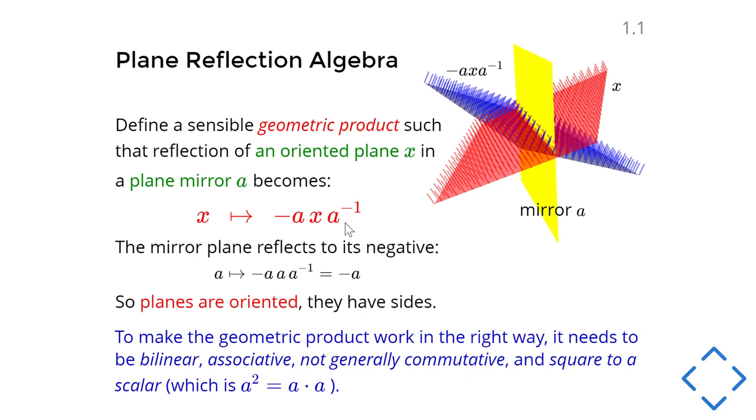We're going to take this as the core of our need to define a proper product. You immediately see that if I would plug in the mirror A itself instead of X, then whatever A A inverse means, it should be one. So I get minus A, and that means apparently we have an oriented geometry. We have not only planes but planes that have sides. And the mirror A, if you reflect it in itself, the shiny side gets to the other side, and this is what the minus means. And gradually as you start working through this, you find that this product is not that exceptional at all. It's just a bilinear product, so bilinear in each of its terms. We're going to assume associativity, so you don't have to worry about brackets. We should say it's not generally commutative because otherwise this formula would be rather trivial. And we'll have to say that a plane squares to a scalar. In fact, it's one of those geometric numbers that Steven was talking about that have a positive square.